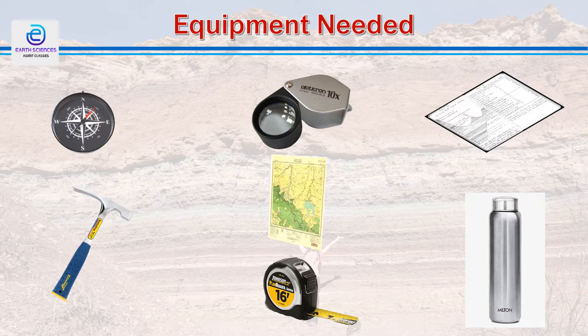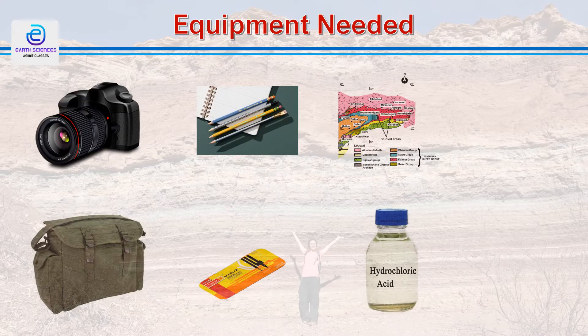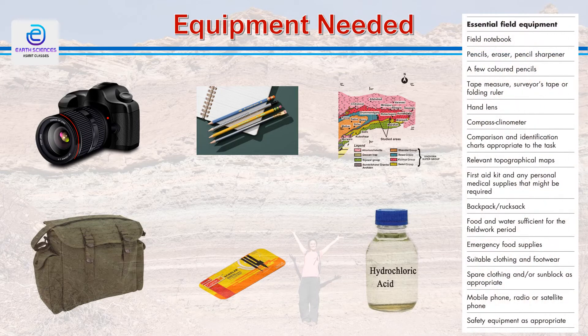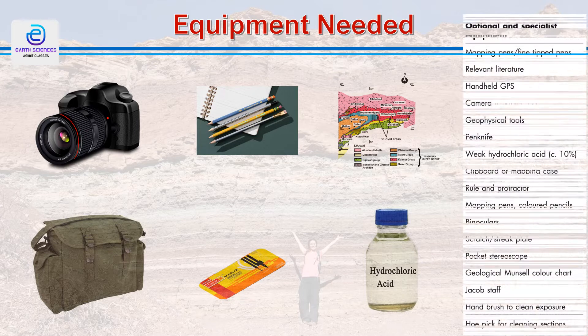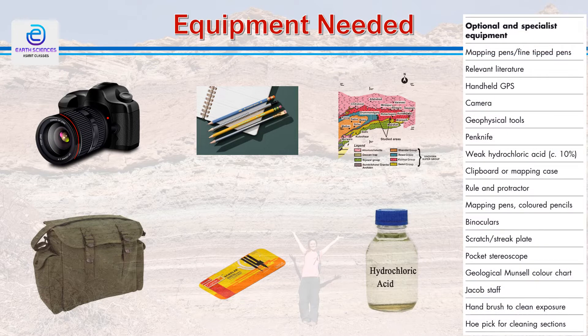For collection of stratigraphic data in the field, some simple equipment is necessary. These include a field diary, measuring tape, hammer with a set of chisels, Brunton compass or clinometer compass, set of pencils, haversack, hand lens, etc. It is preferable to carry a topographic map of the area if available. These are the essential field equipment for collecting stratigraphic data, along with a list of some specialized field equipment.